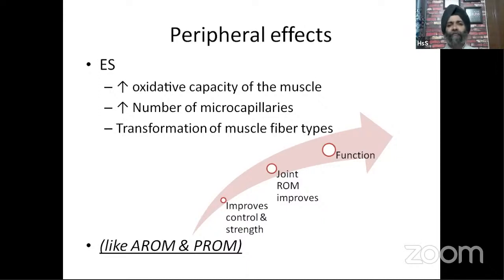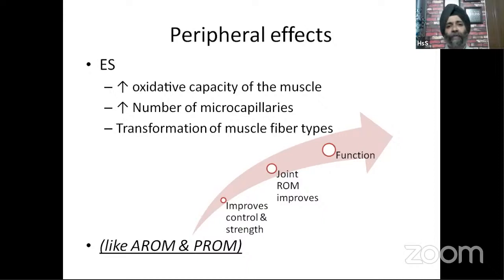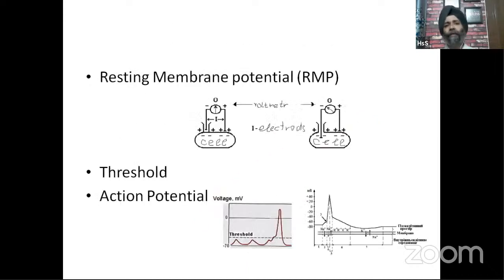Whenever an electrical current is given to the muscle, it produces joint range of motion, just like active or passive range of motion exercises delivered by a therapist. Whatever beneficial effects a movement can produce on the body can also be achieved through electrical stimulation — for example, improving control and strength, improving joint range of motion, and thereby changing the functional capacity.